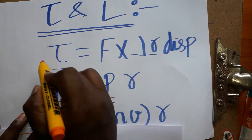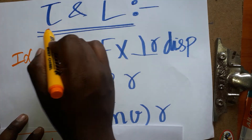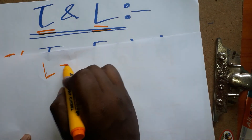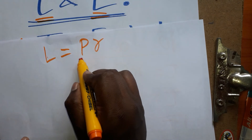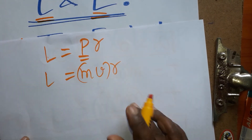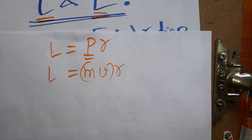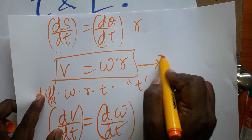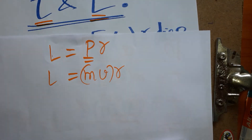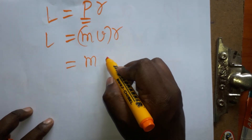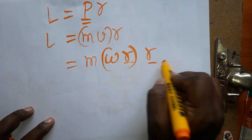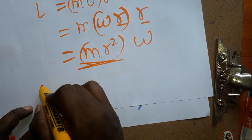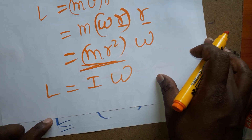Now let's find angular momentum. Angular momentum L equals linear momentum times radius, which equals mass times velocity times r, so L equals mvr. Since v equals omega r in circular motion, substituting gives L equals m times r times omega r equals m r squared times omega. Since m r squared is moment of inertia I, angular momentum L equals I times omega.